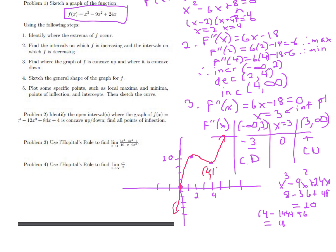When labeling points, you need to put in your coordinates. The inflection point is at x = 3, and the y-value is 27 − 81 + 72. We also have the origin at (0, 0). That's all we'd know about this polynomial graph, and I'd say that's done.